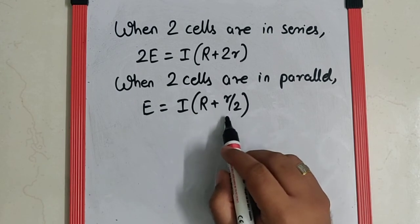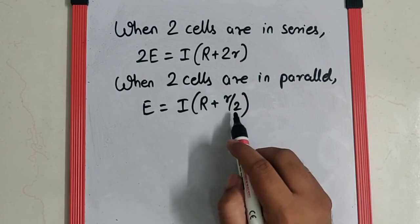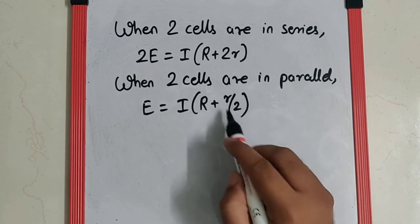So two resistances in parallel becomes r by 2.